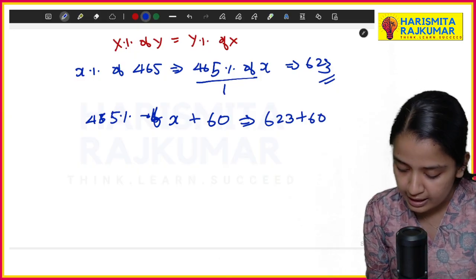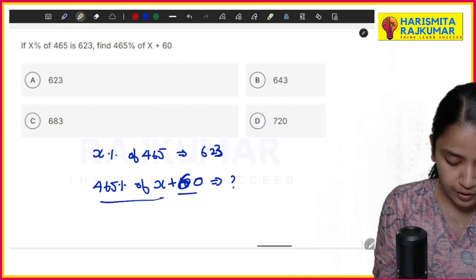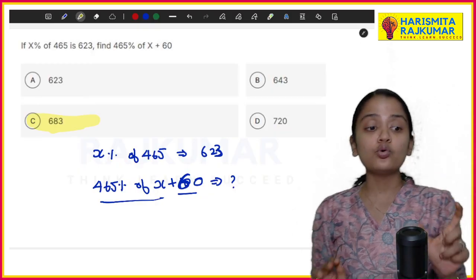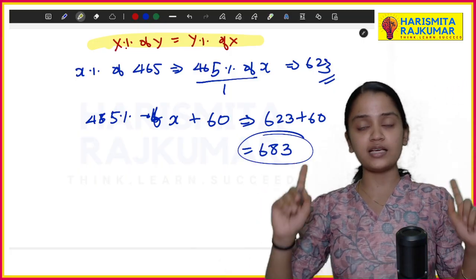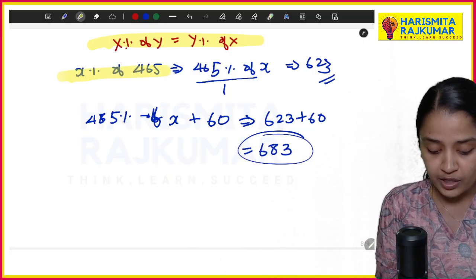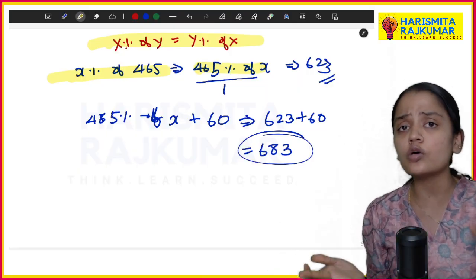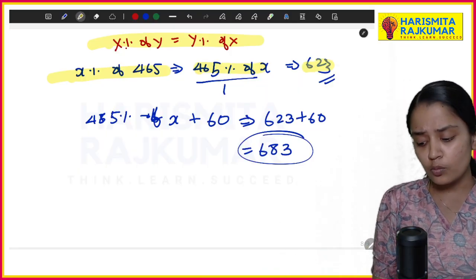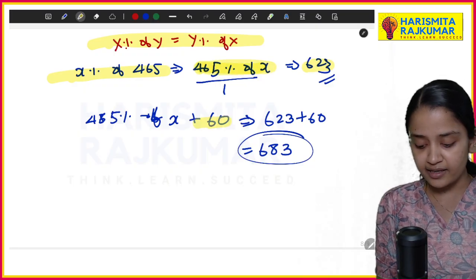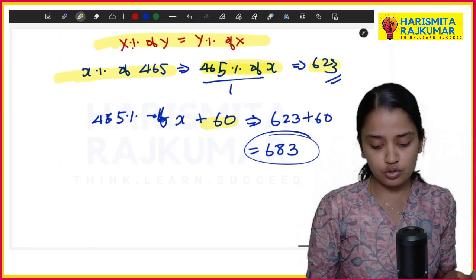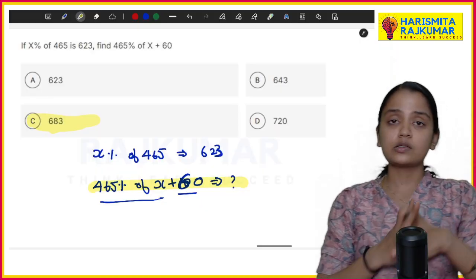But in the question, with this they added 60. So the question is 465% of x + 60. This is given in the question as 623, then plus 60. So I will get 683. So this is my answer. My answer for this question is 683. You are just using one rule for this, that is property one: x% of y equals y% of x.